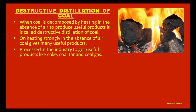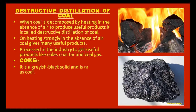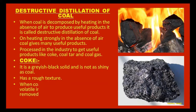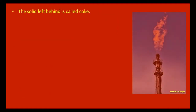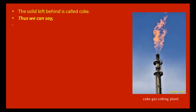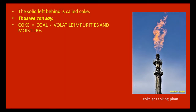Coal is processed in the industry to get useful products like coke, coal tar, and coal gas. Coke is a grayish black solid and is not as shiny as coal; it has a rough texture. When coal is heated in the absence of air, the volatile impurities — having low melting and boiling points — and moisture get removed. The solid left behind is called coke, which contains approximately 98 percent carbon.